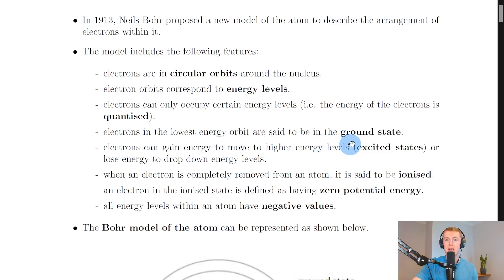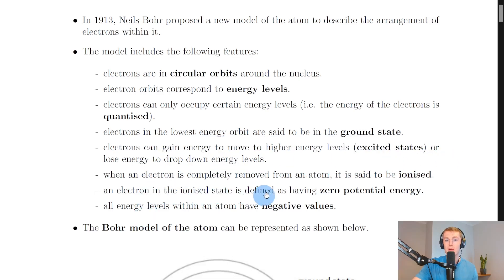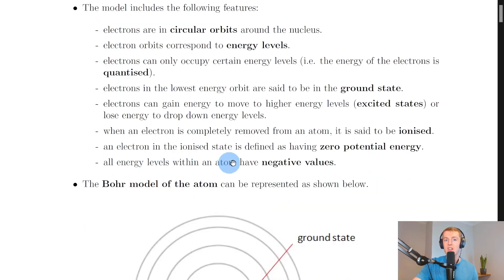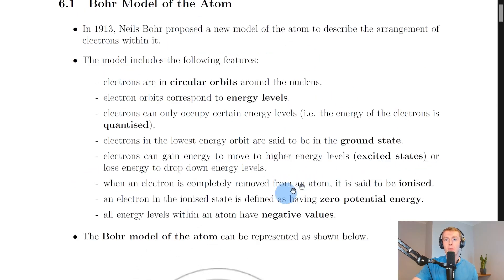Electrons in the lowest energy orbit are said to be in the ground state, and electrons can gain energy to move to higher energy levels, which are called excited states, or lose energy to drop down energy levels. When an electron is completely removed from an atom it is said to be ionized. An electron in the ionized state is defined as having zero potential energy, and all energy levels within an atom have negative values.